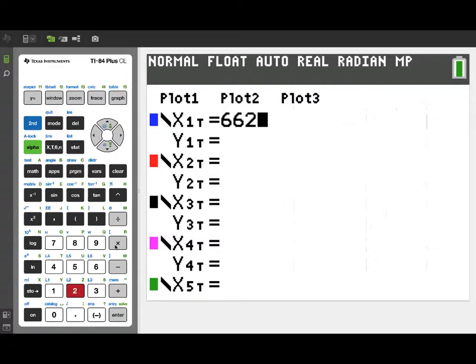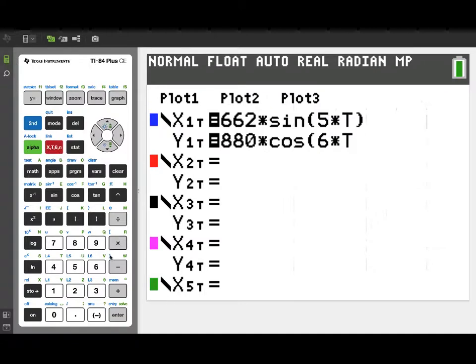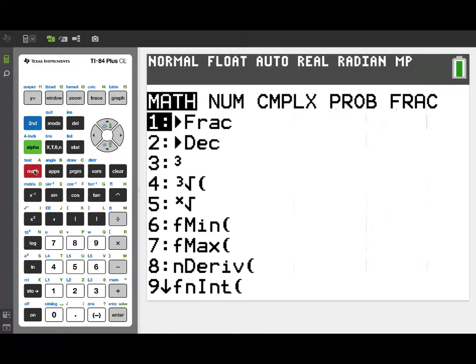Now we're going to enter a couple of functions that appeared in the BC AP exam from 2018, question 2. Now these two functions are actually velocity functions for a boat at sea. So X1 of t is 662 times sine of 5t. Y1t is 880 times cosine of 6t. Once we've entered these velocity functions, we'll go ahead and use them to answer one of the questions at hand.